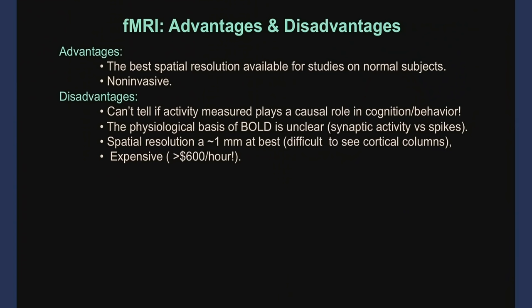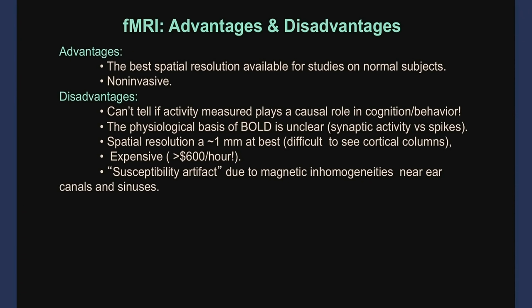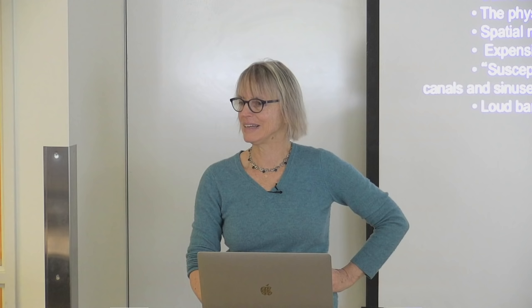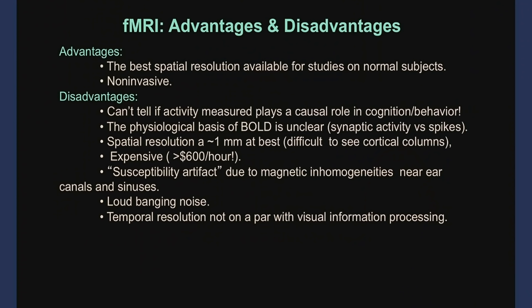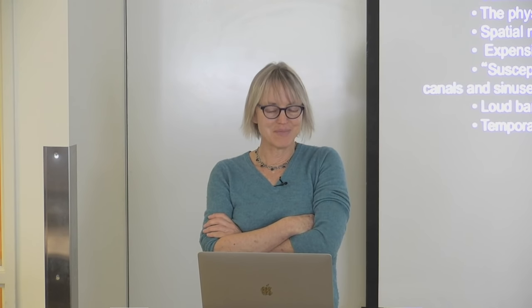It's very expensive — in most places more than $600 an hour. There are parts of the brain where it's really hard to get any signal for physics-related reasons. It makes a loud noise, which is a problem for scanning infants or doing auditory experiments. The temporal resolution is not even close to the time scale on which vision happens — functional MRI is really slow because it takes a long time for blood flow to change after the increase in neural activity.